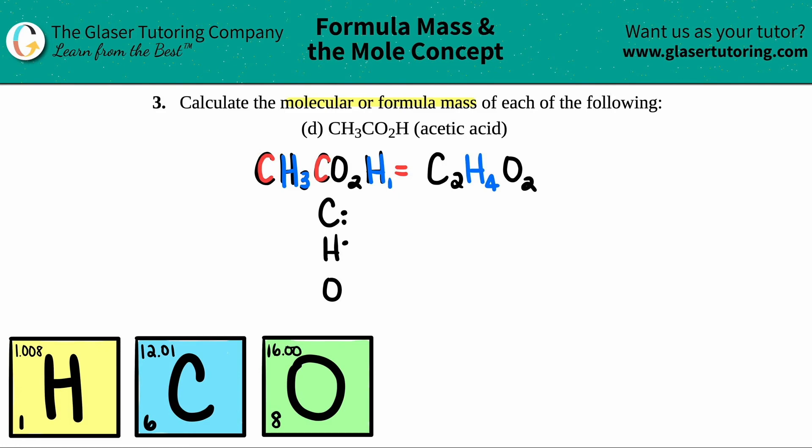In order to find a molecular mass, you have to find out how many total of each element you have. But we did that hard work already. We said that there were two carbons, four hydrogens, and two oxygens.